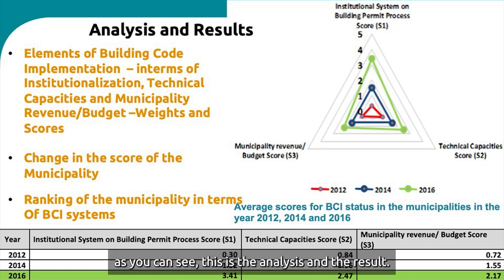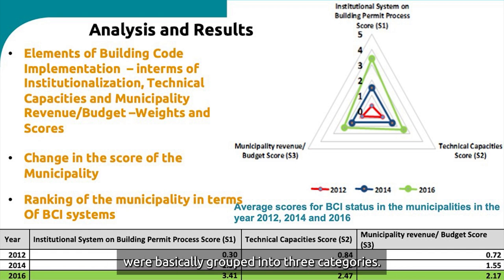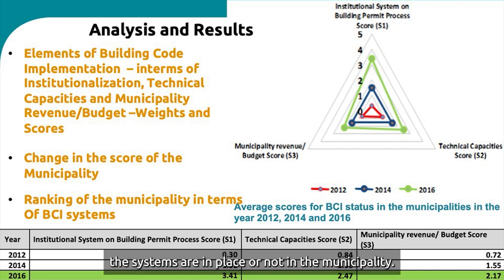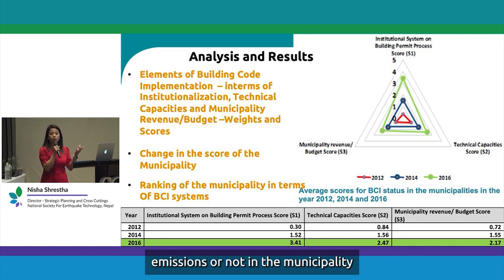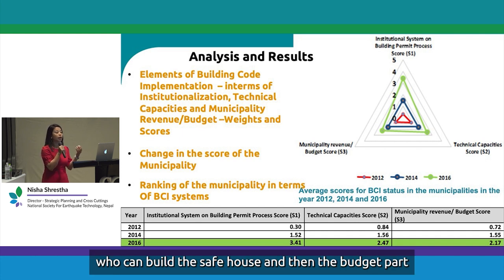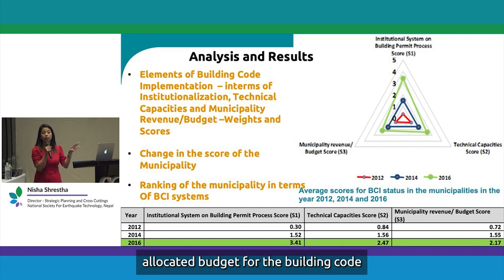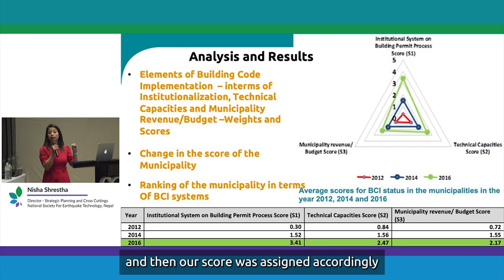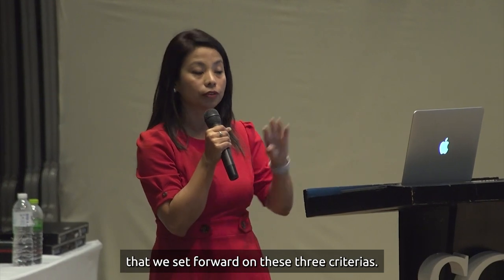For analysis, the questions were grouped into three categories: institutionalization — are the systems in place in the municipality; technical capacity — are there trained engineers and masons; and budget — has the municipality allocated budget for building code implementation. Questions were grouped accordingly, given weightage, and scores were assigned based on the importance of each indicator across these three criteria.